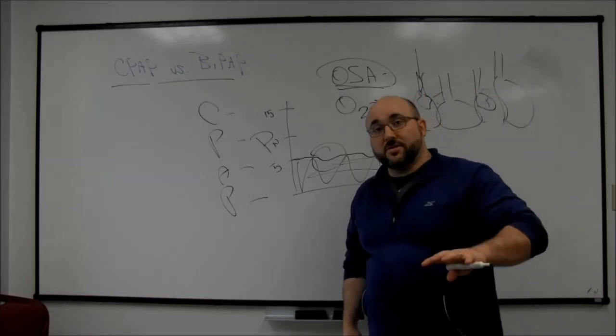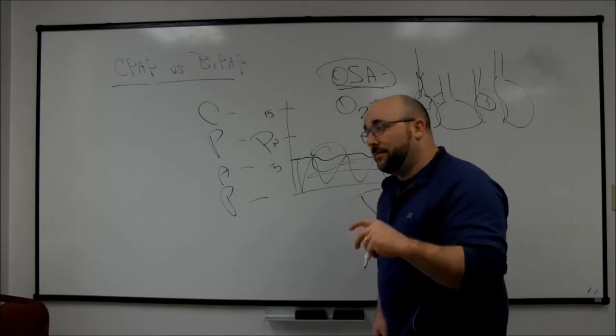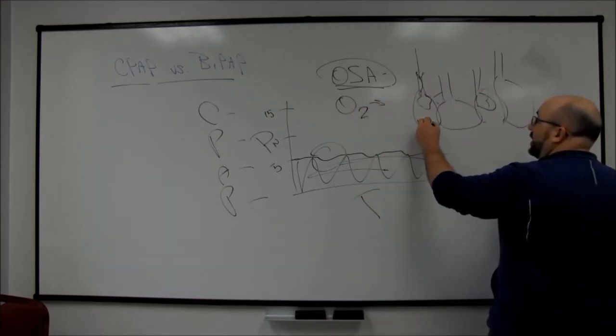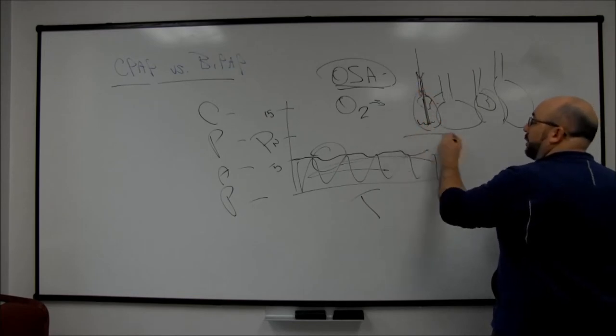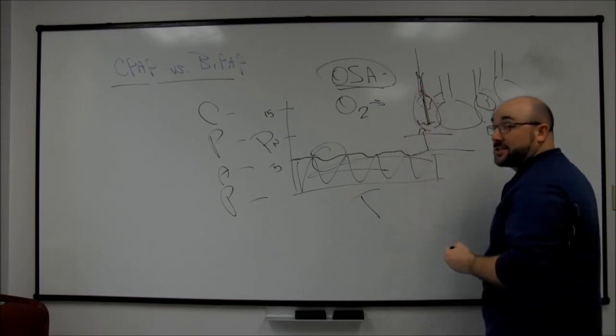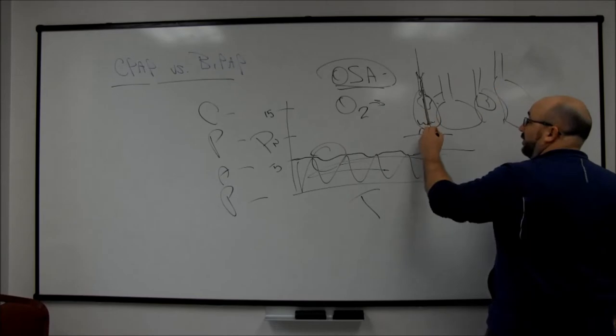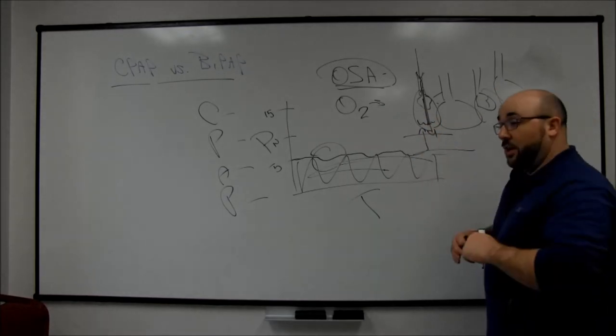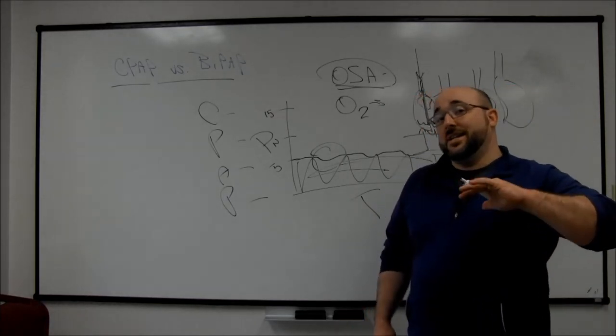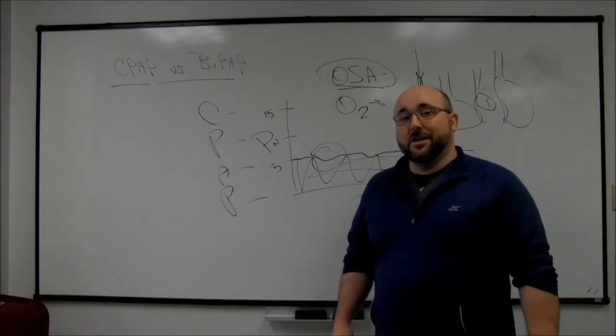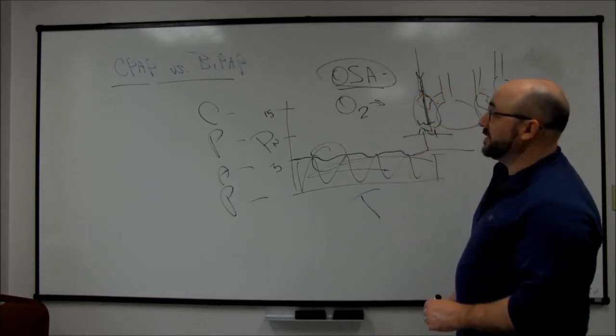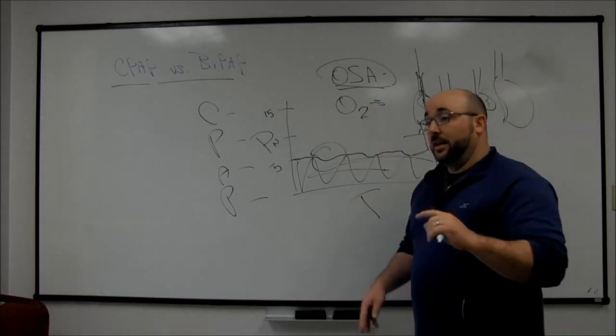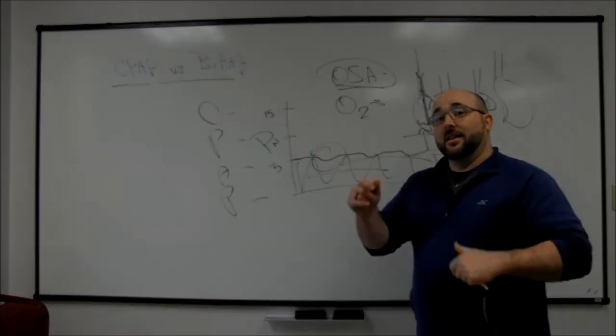That's what CPAP does: OSA and straight oxygenation. It also can be used really efficiently for congestive heart failure without a ventilatory component. So if they have fluid in these alveoli, it can help to push pressure down into here, offset that pressure of the fluid coming from the vessels in, and actually push the fluid back into the vessels, recruit some alveoli, and then we can dump that fluid off through some kind of diuresis-type process.